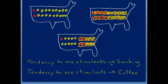If the tendency to use stimulants is a cause of smoking, we think about the whole population. If everyone had this tendency, would the risk of smoking be higher than if nobody had it? Yes — and so we hypothesize a causal arrow. The same logic applies to coffee drinking: if everyone had the tendency, the risk of coffee use would be higher than if nobody had it.